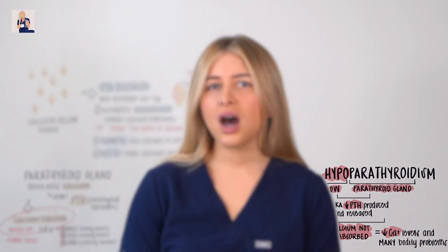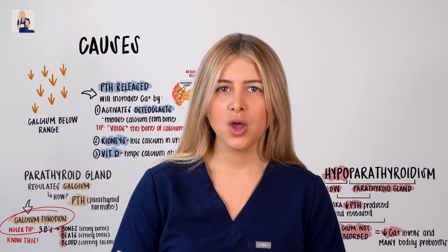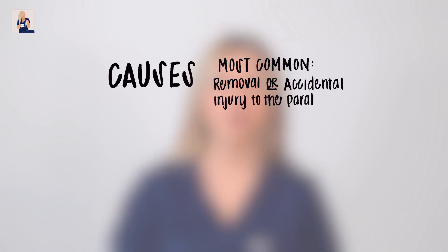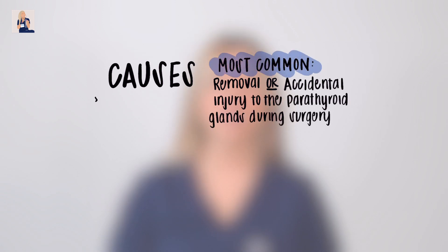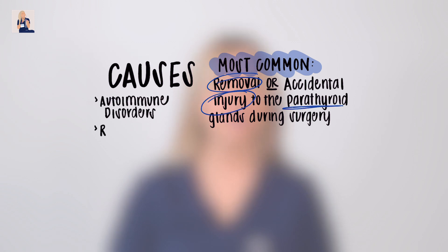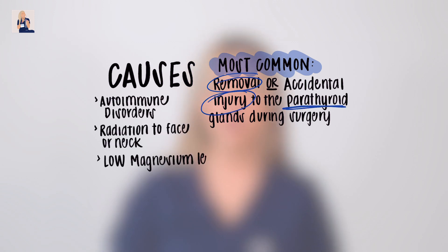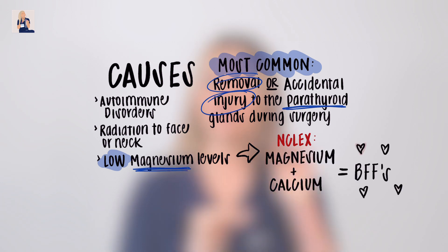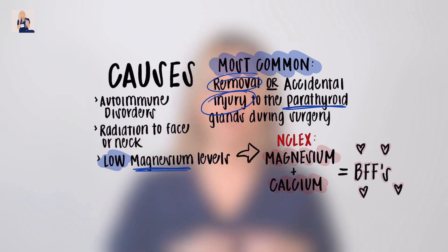What causes hypoparathyroidism? The most common cause is removal of or accidental injury to the parathyroid glands during surgery to the neck. Other causes include autoimmune conditions, radiation to the face or neck, and low magnesium levels. Remember that magnesium and calcium are BFFs — if one is low, the other is low too.